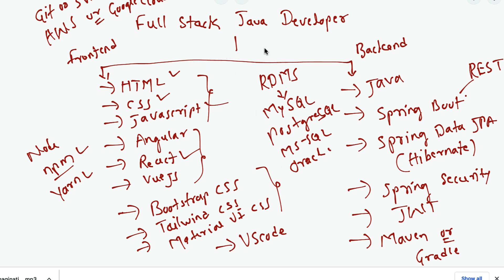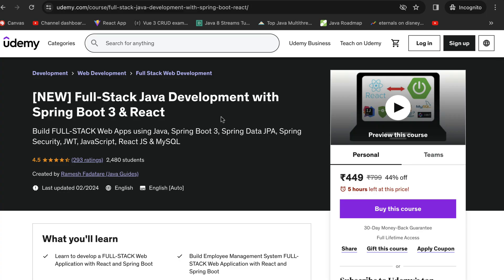These are the tools and technologies a full stack Java developer has to know — these are the bare minimum. Apart from these, you may encounter other libraries or frameworks in real-time development. To become a full stack Java developer, I suggest my Udemy course: Full Stack Java Development with Spring Boot 3 and React. In this course you'll learn to build full stack web applications using Java, Spring Boot 3, Spring Data JPA, Spring Security, JWT, React.js, and MySQL database.